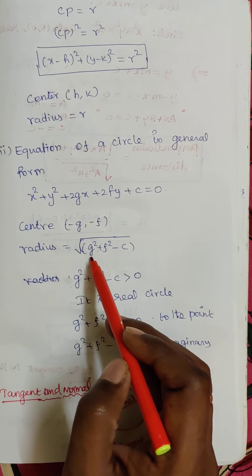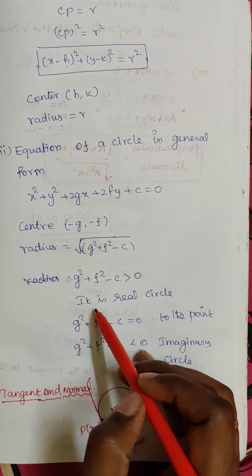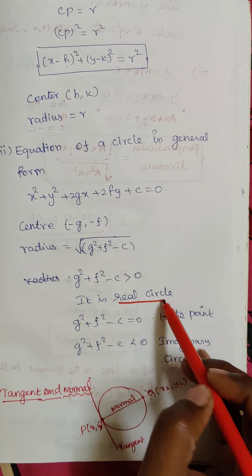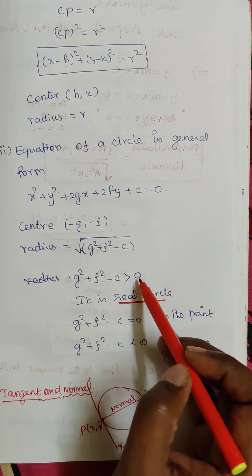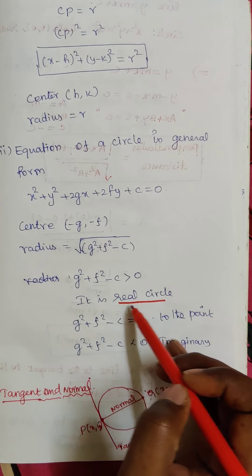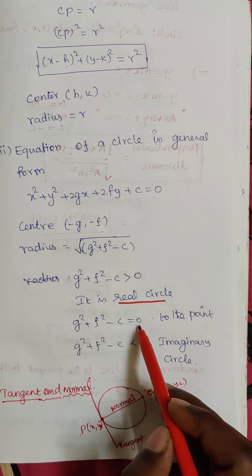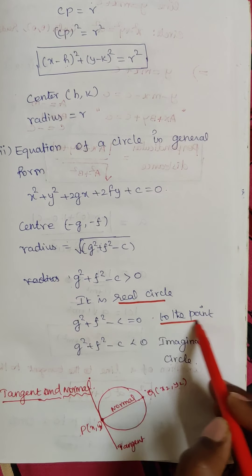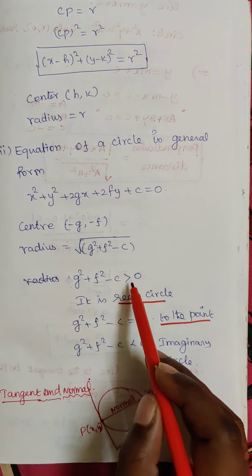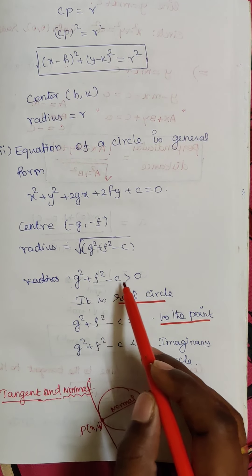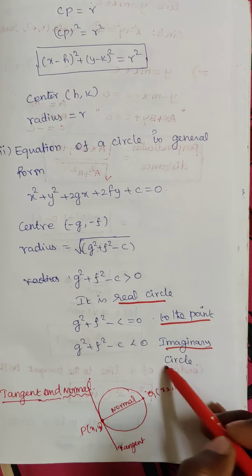If g squared plus f squared minus c is greater than 0, it is called a real circle. If g squared plus f squared minus c equals 0, the circle reduces to a point. If g squared plus f squared minus c is less than 0, then the circle is imaginary.